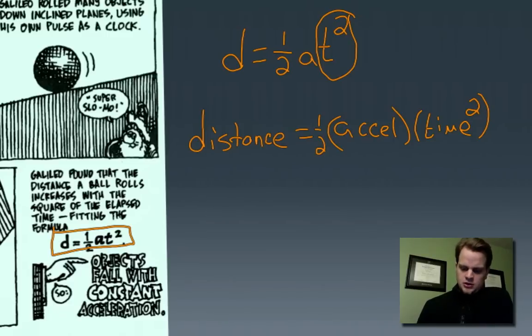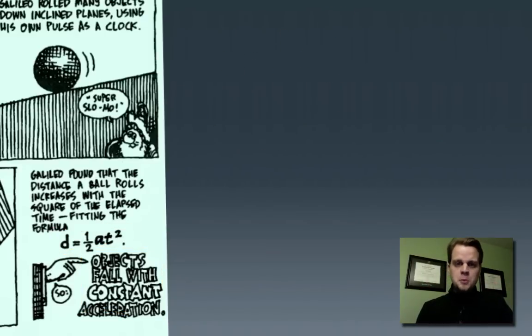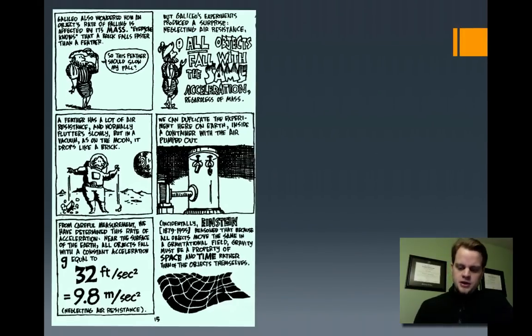All right. Also, he found that objects, when they fall, they fall with a constant acceleration. That's key. The acceleration is the same. Gravity acceleration is the same on Earth, no matter where you are, for the most part. And it's always constant. It doesn't change. It's constant. Let's just keep it at that.